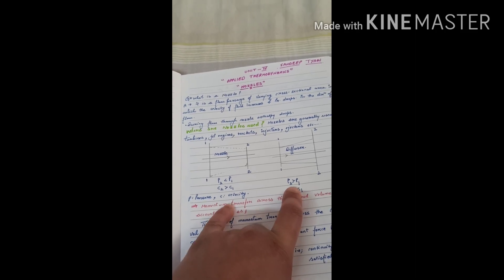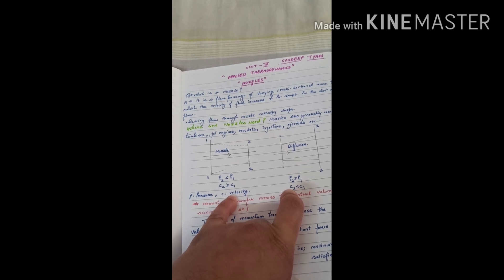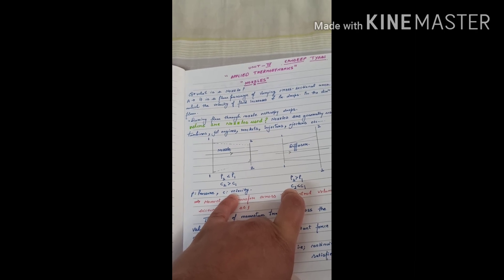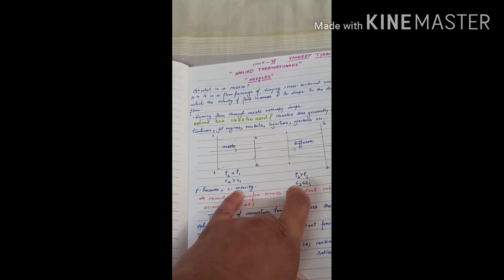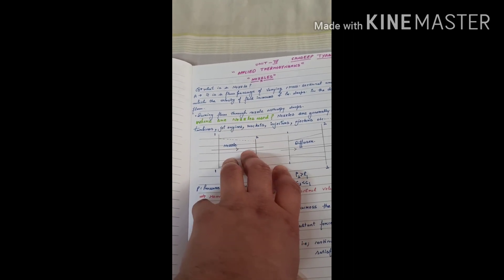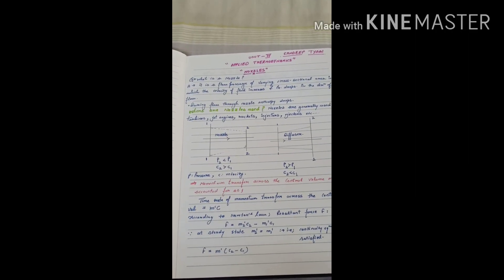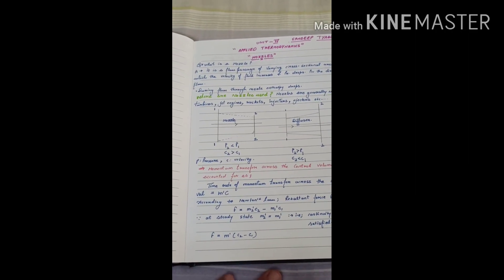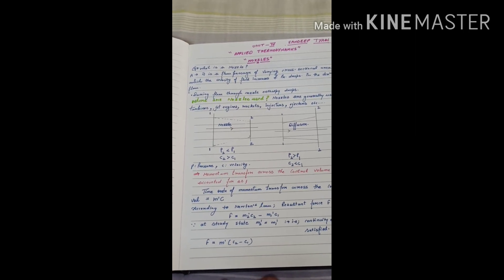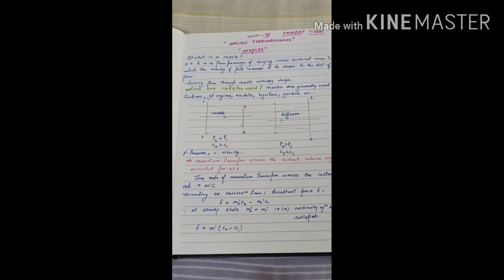The basic difference between a nozzle and a diffuser should now be clear. Nozzles are used in turbines, jet engines, injectors, and ejectors. One more important point: the enthalpy of the fluid decreases as the fluid leaves the nozzle.